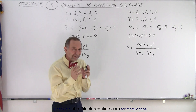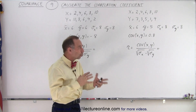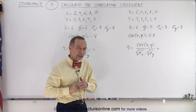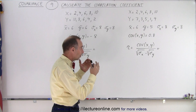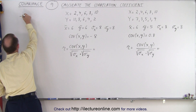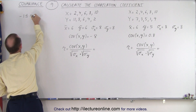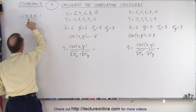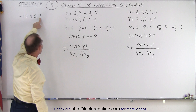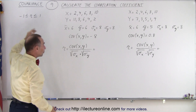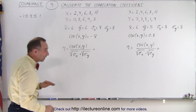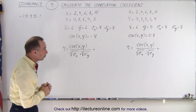We already have a feeling that, since the covariance is a very small number, there's probably not a good correlation between the two data sets. When we calculate the correlation coefficient, we have a very good way of looking at it. Remember, the correlation coefficient is always going to be somewhere between negative 1 and 1. If it's close to negative 1 or 1, there's a very strong relationship between the two — one with the same trend, the other with the opposite trend. If it's much closer to 0, there's not much of a correlation.